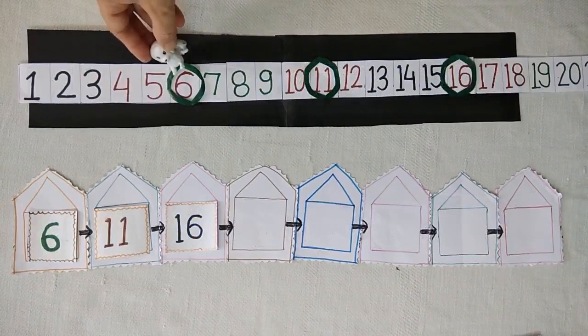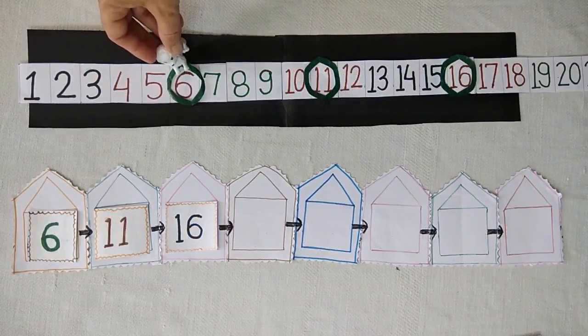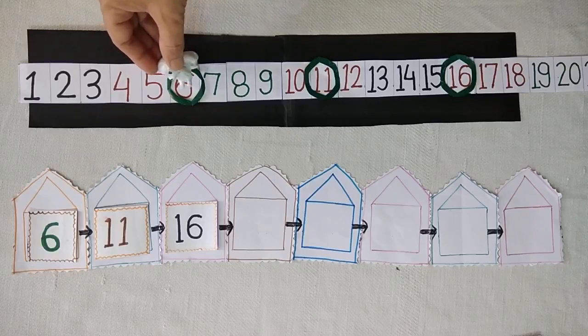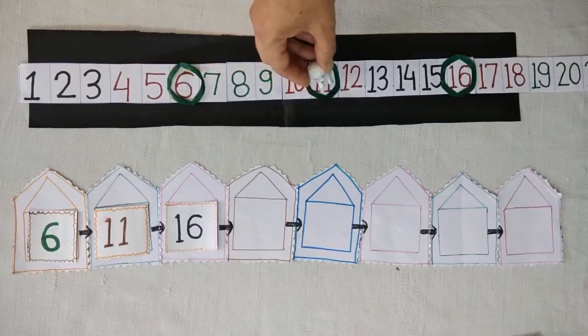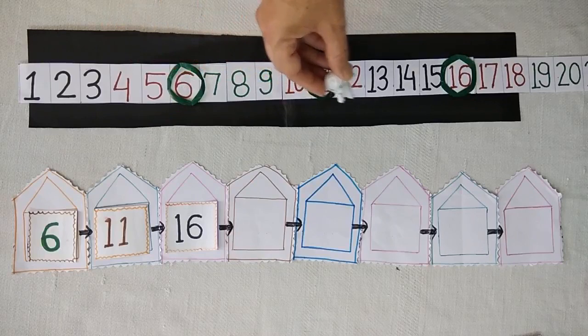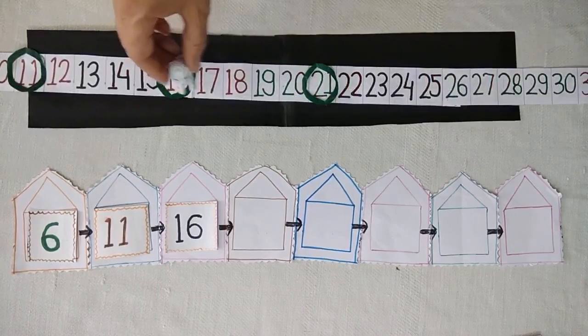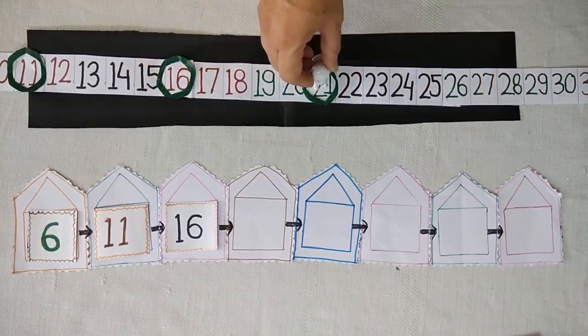Now tell me where is it standing. Yes, it is standing on 6 and jumps to 11, then 16, then 21, skipping 5 numbers every time.